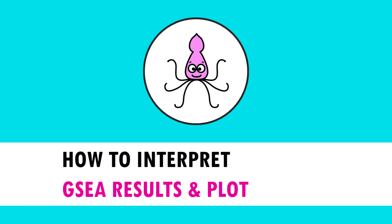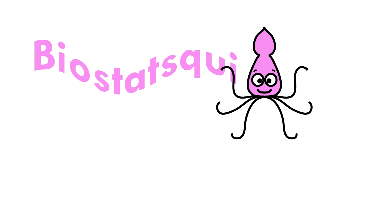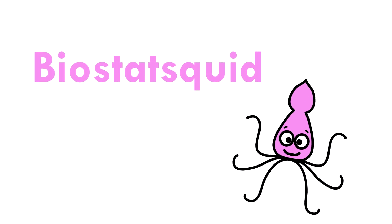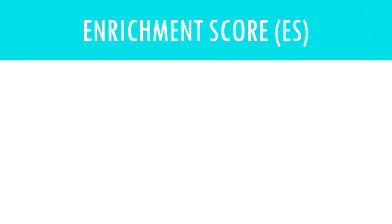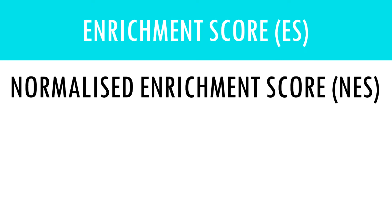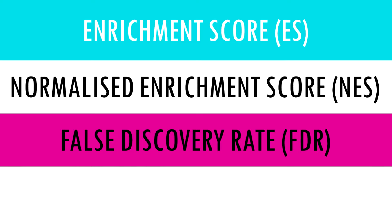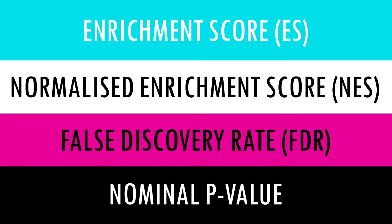Let's dive in. There are four key statistics that gene set enrichment analysis will give you: the enrichment score or ES, the normalized enrichment score or NES, the false discovery rate FDR, and the nominal p-value. We will go through each one of them and explain how they relate to the GSEA plot.